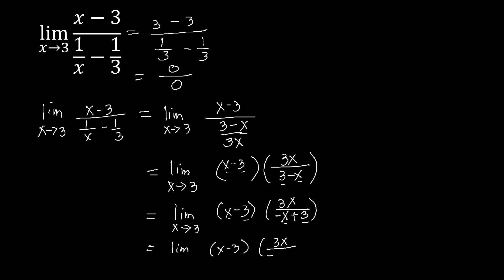Taking out our negative from negative x plus 3 — negative x divided by negative will be positive, and positive 3 divided by negative will be negative 3. Now this is the same: we can cancel x minus 3 and that term, leaving us with the limit of 3x over negative 1. We've canceled everything on the denominator part but still have a 1 there. So we have negative 1 at the denominator as x approaches 3. This is now the limit of 3x divided by negative 1, that is negative 3x, as x approaches 3.